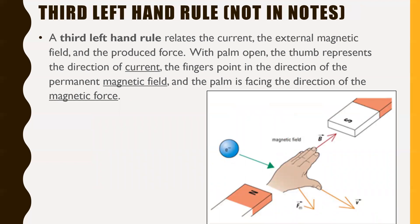The third left hand rule is my personal favorite. It relates the current, an external magnetic field, and a produced force. Basically, if you have an electric current or even just a single charged particle moving through a magnetic field, you're going to induce a magnetic force to deflect that charged motion. In this picture, we have a negative particle — an electron — moving perpendicular to a magnetic field, and it will experience a deflection downwards. You use a flat hand making an L shape: your fingers represent the direction of the magnetic field, your thumb represents the movement of your negative particle, and your palm pushes in the direction of the force. You can also use your right hand, where your thumb points in the direction of positive particle flow.